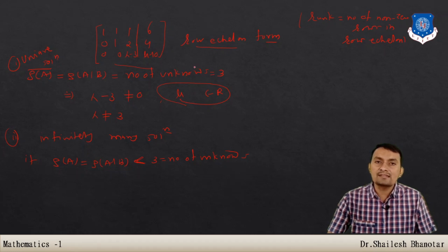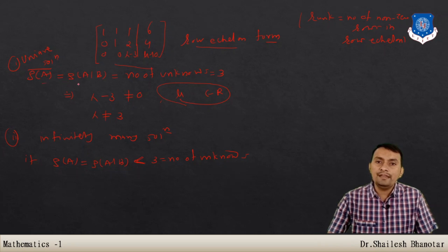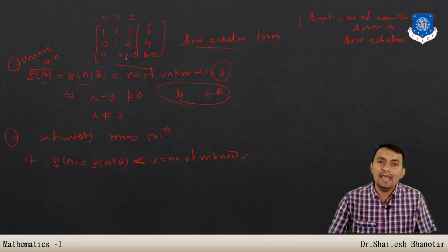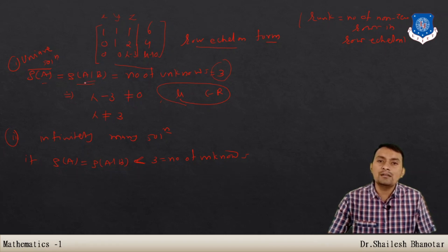Now we conclude: for a unique solution, rank(A) = rank(augmented matrix) = 3 (number of unknowns). This requires the entry (λ−3) to be non-zero, so λ ≠ 3. For any value of μ, the rank of the augmented matrix is also 3. Therefore, the system has a unique solution when λ ≠ 3 and μ is any real number.